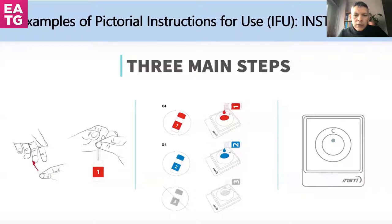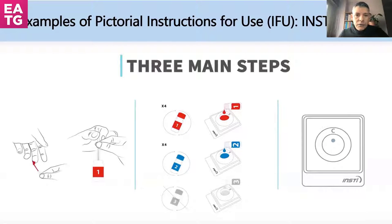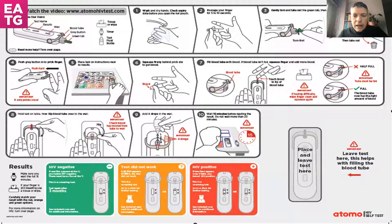The self-tests themselves are usually tests that have been used by healthcare workers with professional instructions. For regulatory approval, companies have to simplify instructions for people doing the tests themselves — they have to be very simple and pictorial, especially for people who cannot read. Here is an example of one of the approved self-tests, the INSTE, which has pictorial instructions, very light on text, more pictures so people can understand the steps easily — this is quite important for self-testing.